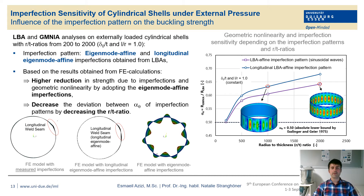In the second step, we investigated the impact of imperfection pattern type on the buckling strength of cylindrical shells under uniform external pressure. We used two types of imperfections: namely eigenmode-affine imperfection pattern and longitudinal eigenmode-affine imperfection pattern. As is evident, the buckling strength is highly reduced by using the eigenmode-affine imperfection pattern. However, the deviation between the two curves reduced with decreasing L/t ratios.